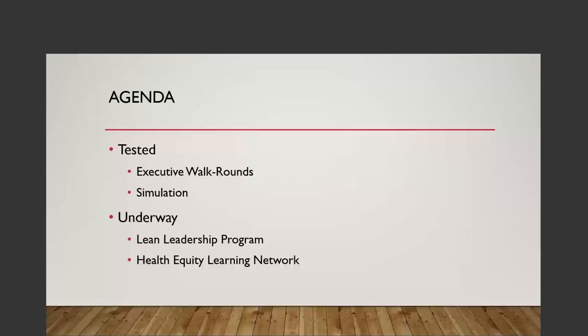When breaking these down — talking about executive walk rounds, simulation, lean leadership programs and so on — what is the function? Essentially we're trying to engage leaders. The second piece is building capacity, which typically means education provided in a leadership program. We're also trying to increase interaction between the frontline and the leader — which goes to high reliability theory in terms of deference to the frontline and awareness of operations. And beyond just engaging and building this capacity, there's the actual demonstration piece, which we think will really engage the frontline as well as provide the pass-through of knowledge from leaders down into the frontline. That's the theory behind these specific kinds of interventions.